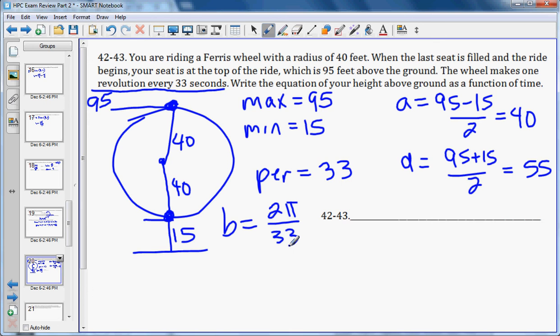So we have all of our information here. We'll do 40. Since we're starting with the maximum, we'll use cosine of 2π over 33 times T, close the parentheses because there's no C value, plus 55. And that is all the trig problems.